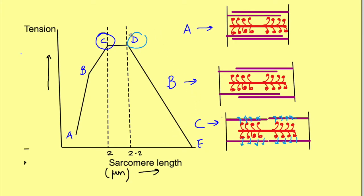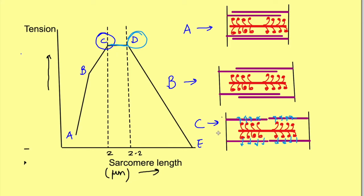The same maximum tension is also seen at point D. The tension generated is equal at C and D because at D, all the myosin heads can still interact with the active sites of actin. Why is there no difference between C and D? At sarcomere length C, a portion of the actin is present in the central region — the tail region of the myosin filament — where there are no myosin heads. So whether the sarcomere is at length C or D, the maximum number of active sites on actin are interacting with myosin heads. Thus, at sarcomere lengths of 2 micrometers and 2.2 micrometers, we get maximum tension.